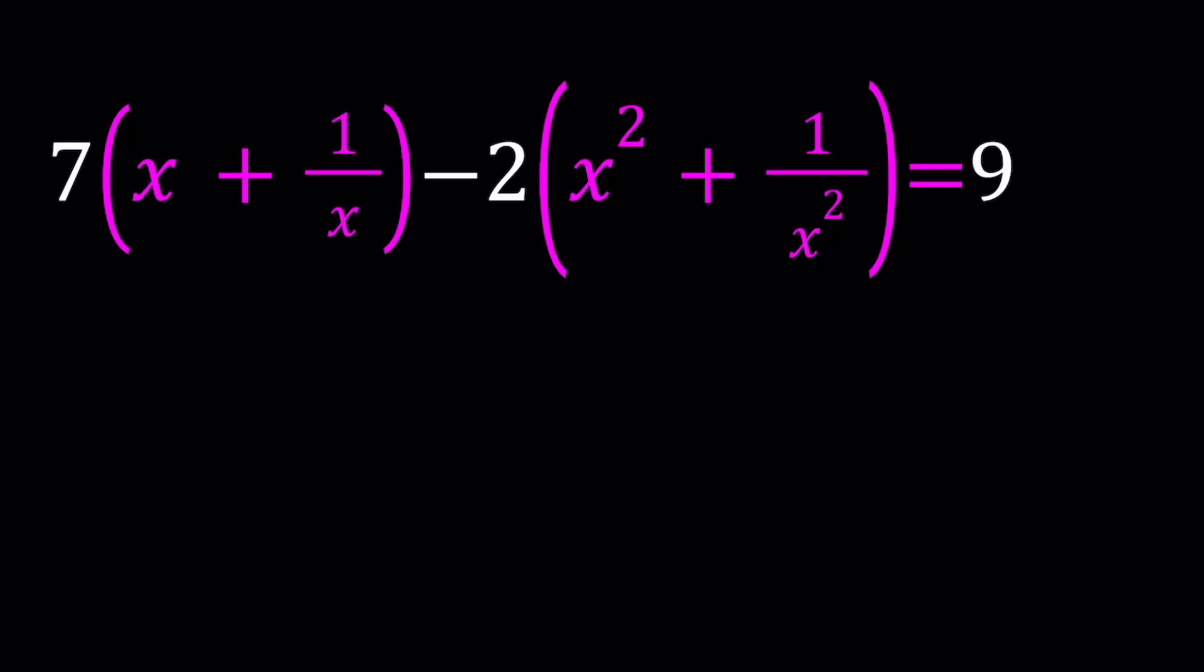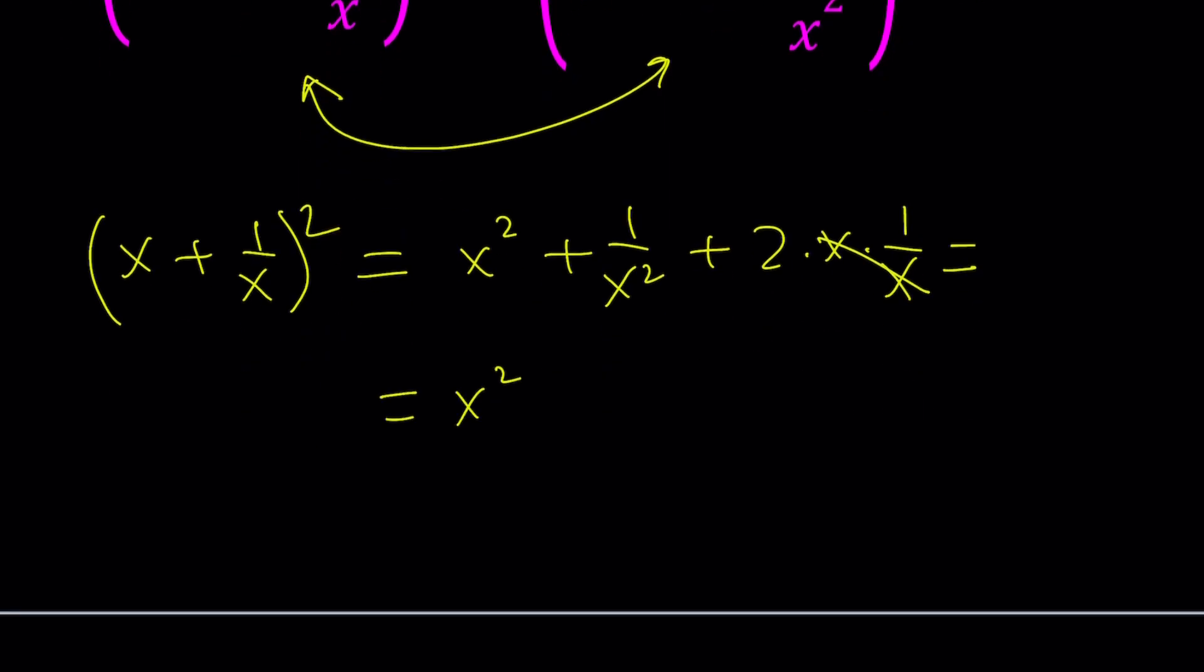So let's go ahead and use substitution to solve this problem. We're going to get some interesting results. And then I'll also give you one of my observations for this problem. I have x plus 1 over x and x squared plus 1 over x squared. When you see these two things together, you should definitely know that they are related. If you square x plus 1 over x, you get x squared plus 1 over x squared plus 2. So what does this tell you? This tells you that we could use substitution.